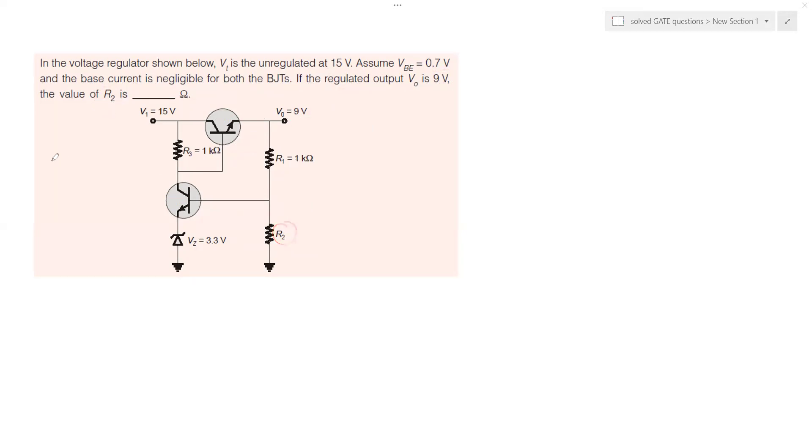We can see that this is a circuit of voltage regulator, a simplest form of a voltage regulator circuit consisting of BJT and you got the Zener diode here as well. How to solve this problem? We have to find the value of resistor R2 here.